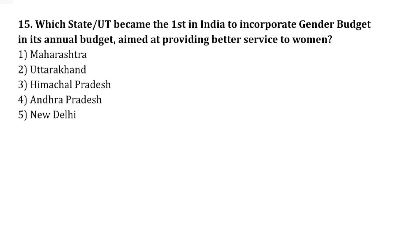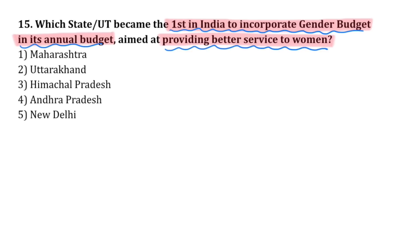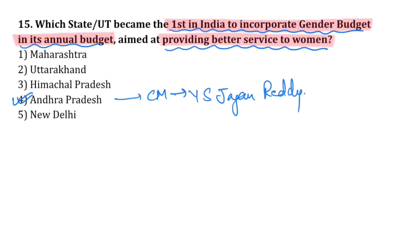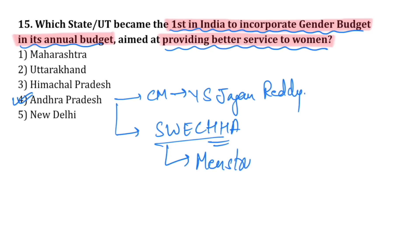Which state or UT became the first in India to incorporate a gender budget in its annual budget, aimed at providing better services to women? It is Andhra Pradesh. The Chief Minister is YS Jagan Reddy. Andhra Pradesh also launched a scheme called Swecha, an awareness program about menstrual hygiene.